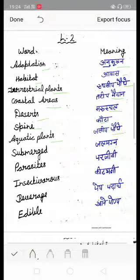Aquatic plants means jaleya podhe, submerged means doobe hue, parasites means parjeevi, insectivores means keetak bhakshi, beverages means pey padaar, edible means khane yogya.